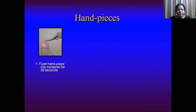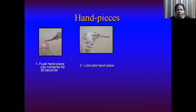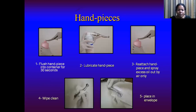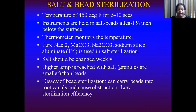Handpieces can be sterilized as follows: first, flush the handpiece after using it on the patient by running it into a container for 30 seconds. Then lubricate it with oil or spray, re-attach the handpiece, and spray excess oil out using air only. Close the water knob and remove excess oil, then wipe it clean, place it in a sterilization pouch, and subject it to the sterilization cycle.